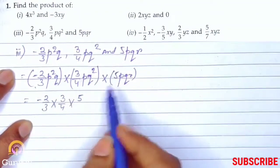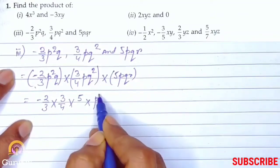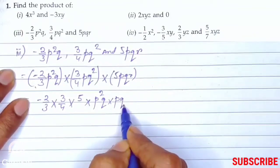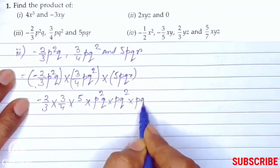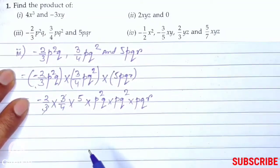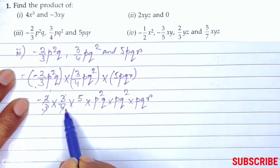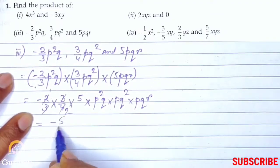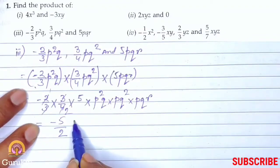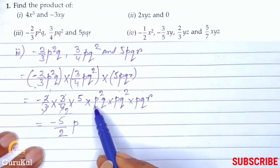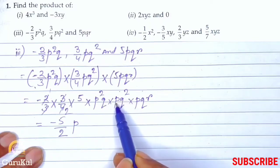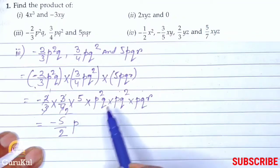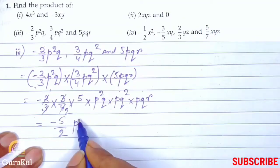Constant: minus 2 by 3 into 3 by 4 into 5. Then literals: into p square q, into pq square, into pqr. 3 and 3 got cancelled, 2 and 2, nothing else. This becomes minus 5 by 2. Now let us talk about p: p to the power 2, p to the power 1, p to the power 1.